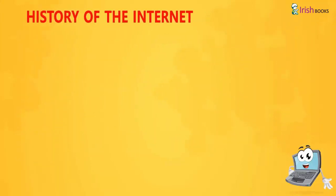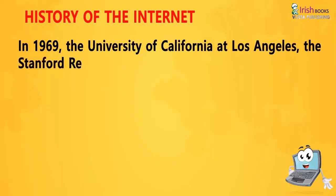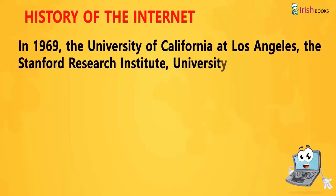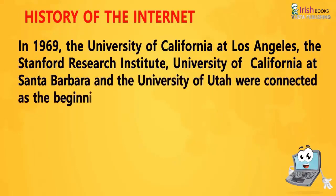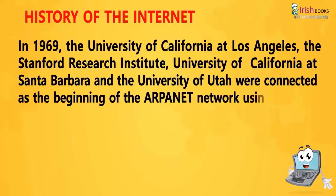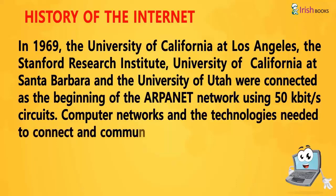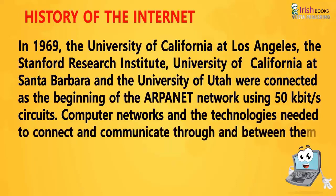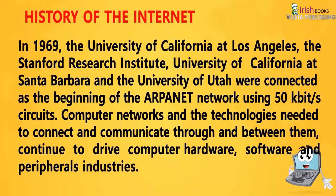History of the Internet: In 1969, the University of California at Los Angeles, the Stanford Research Institute, University of California at Santa Barbara, and the University of Utah were connected as the beginning of the ARPANET network, using 50 kbit circuits. Computer networks and the technologies needed to connect and communicate through and between them continue to drive computer hardware, software, and peripherals industries.